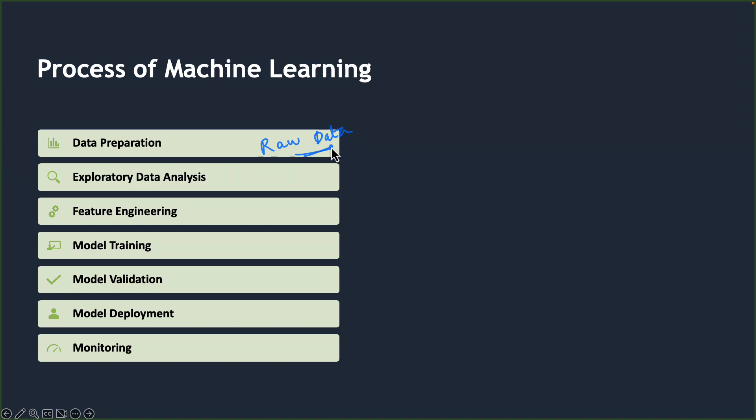Once data preparation is complete, we move to exploratory data analysis. The data scientist performs descriptive and inferential analysis to assess the properties of the data, check data quality, and verify assumptions about the data. This helps determine whether the given data can solve the business problem. Frequent communication and iteration between the business stakeholder and the data science team happens at this stage.